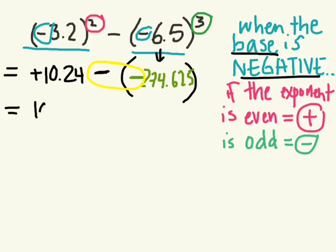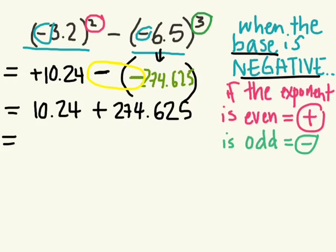What happens when you subtract a negative? So we have 10.24 take away a negative. So we can rewrite it as addition, right? 274.625. And what's the final result? 284.865.